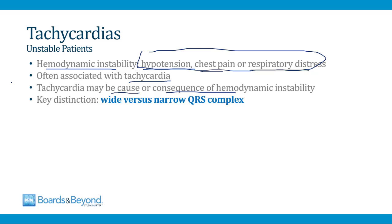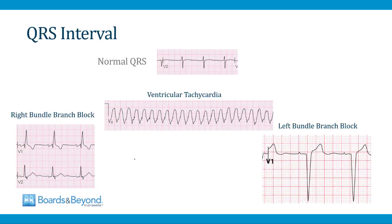When evaluating a tachycardia in an unstable patient, a key distinction is whether the tachycardia is associated with a wide or narrow QRS complex. The QRS interval starts at the beginning of the QRS complex and ends at the end of the QRS complex. A normal QRS interval is less than 120 milliseconds, which is three small boxes wide, and a normal QRS interval is narrow.